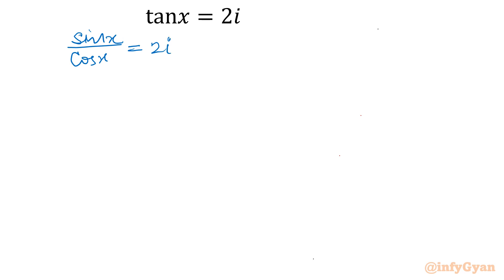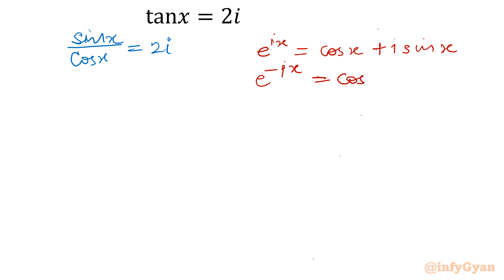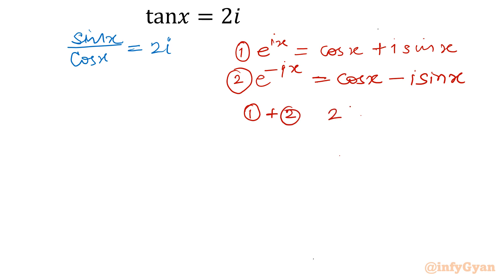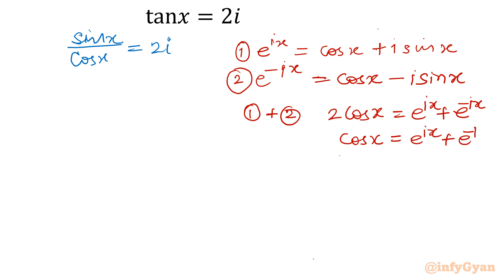Now I will use Euler's identity. We know that e^(ix) = cos x + i sin x. If we replace x by −x, then e^(−ix) = cos x − i sin x, since cos(−θ) = cos θ and sin(−θ) = −sin θ. Call these equations 1 and 2. Adding both equations gives 2 cos x = e^(ix) + e^(−ix), so cos x = (e^(ix) + e^(−ix)) / 2.